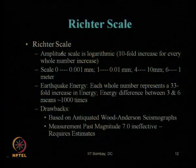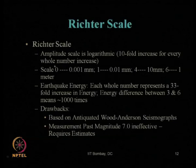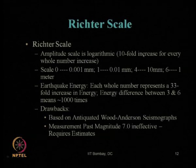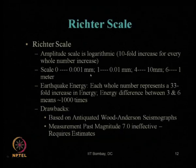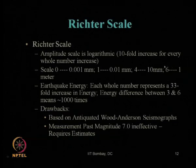Let us start with local magnitude or Richter scale. The Richter scale determines the amplitude of earthquake magnitude using a logarithmic scale — log to the base 10 — with a 10-fold increase for every whole number increase. That means Richter magnitude 3 to 4 means a 10 times increase. Scale 0 corresponds to 0.001 mm of ground displacement, scale 1 to 0.01 mm, scale 4 to 10 mm, and scale 6 to 1 meter of ground deformation.